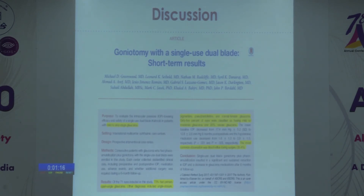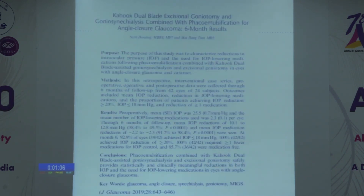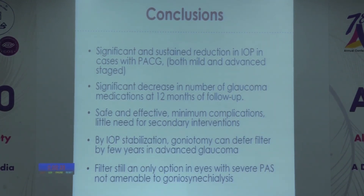In published literature, the Kahook dual blade has been used initially in POAG, then in severe and refractory glaucomas, and there is one latest retrospective 6-month study in primary angle-closure glaucoma. However, the Kahook dual blade is not available in India, so the MVR blade — single-use and disposable — is a very good sustainable option. We have demonstrated significant and sustained IOP reduction and decreased anti-glaucoma medications with MVR goniotomy sustained to 12 months. It is safe and effective, with minimal complications, and may defer filtration surgery in advanced glaucoma by several years. However, filtration surgery remains a viable option in eyes with severe peripheral anterior synechiae not amenable to goniosynechialysis.